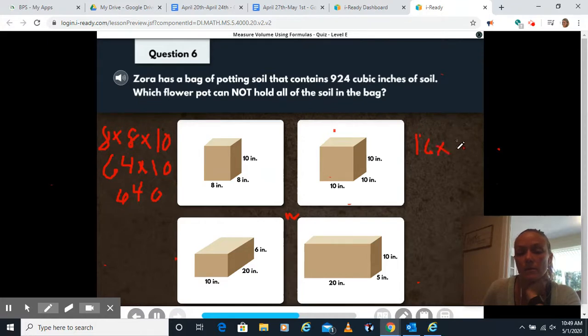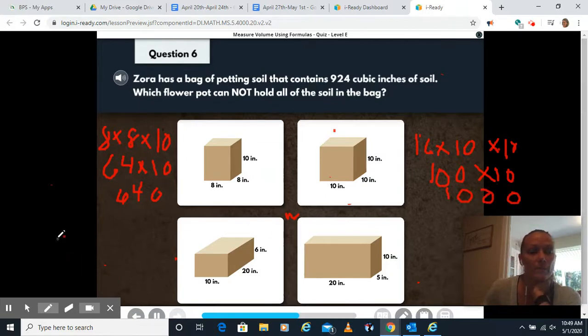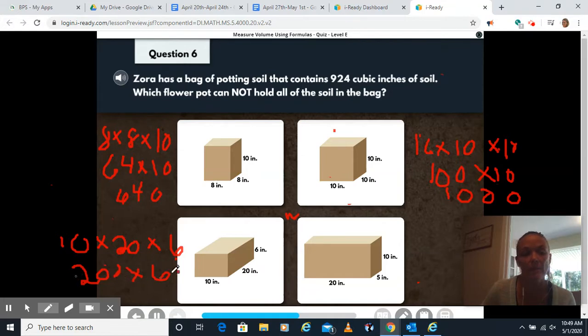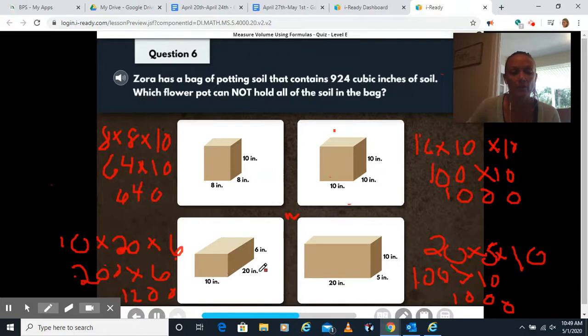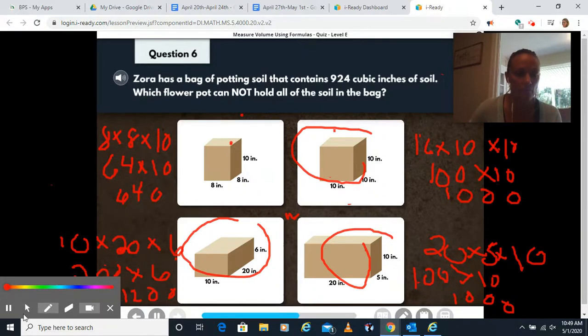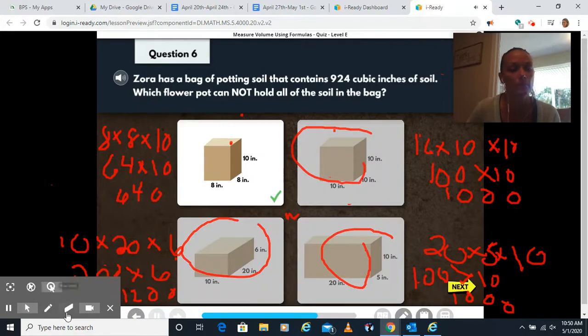This one is 10 times 10 times 10. I know 10 times 10 is 100. 100 times 10 is 1000. We have 10 times 20 times 6. 10 times 20 is 200. 200 times 6. 2 times 6 is 12. Bring down those two zeros. And then we have 20 times 5 times 10. 20 times 5 is 100 times 10 is 1000. So looks like this one would hold it. This one would hold it. This one hold it. We want the one that does not. So we're going to choose the one with a volume of 640 because that one would not hold 924 cubic inches.